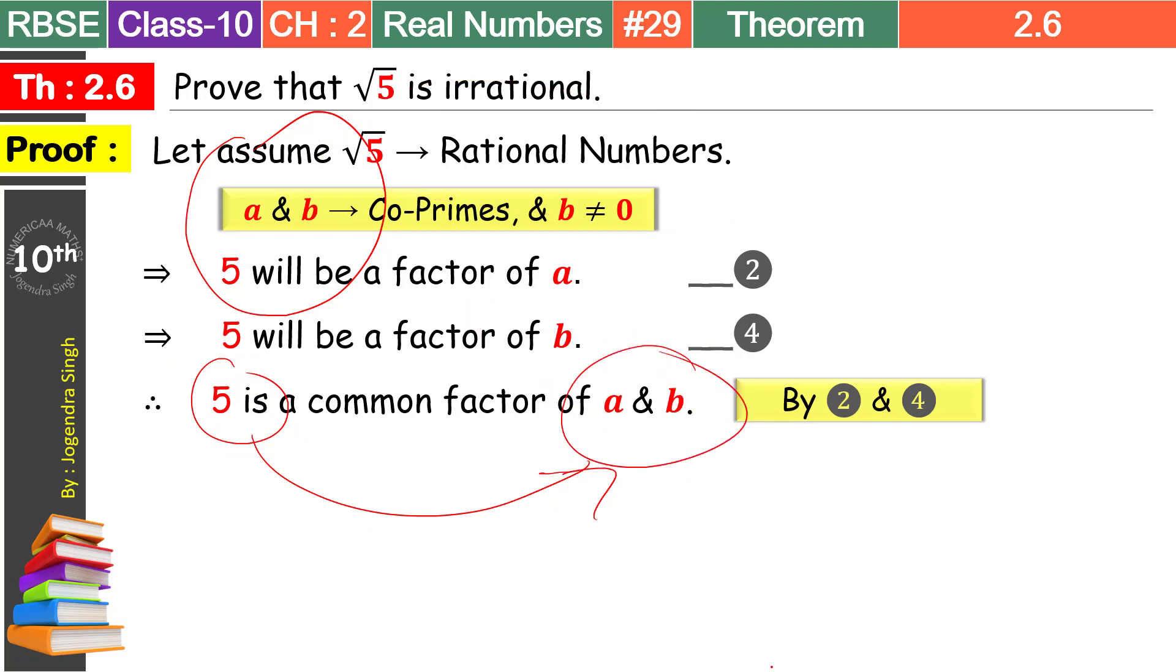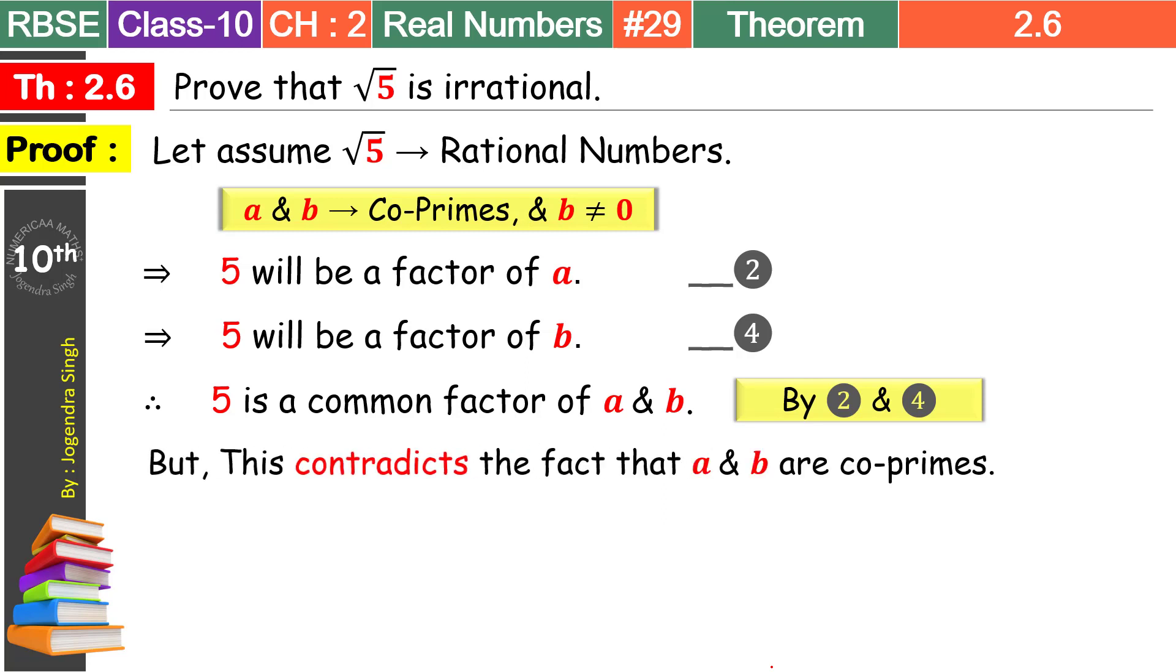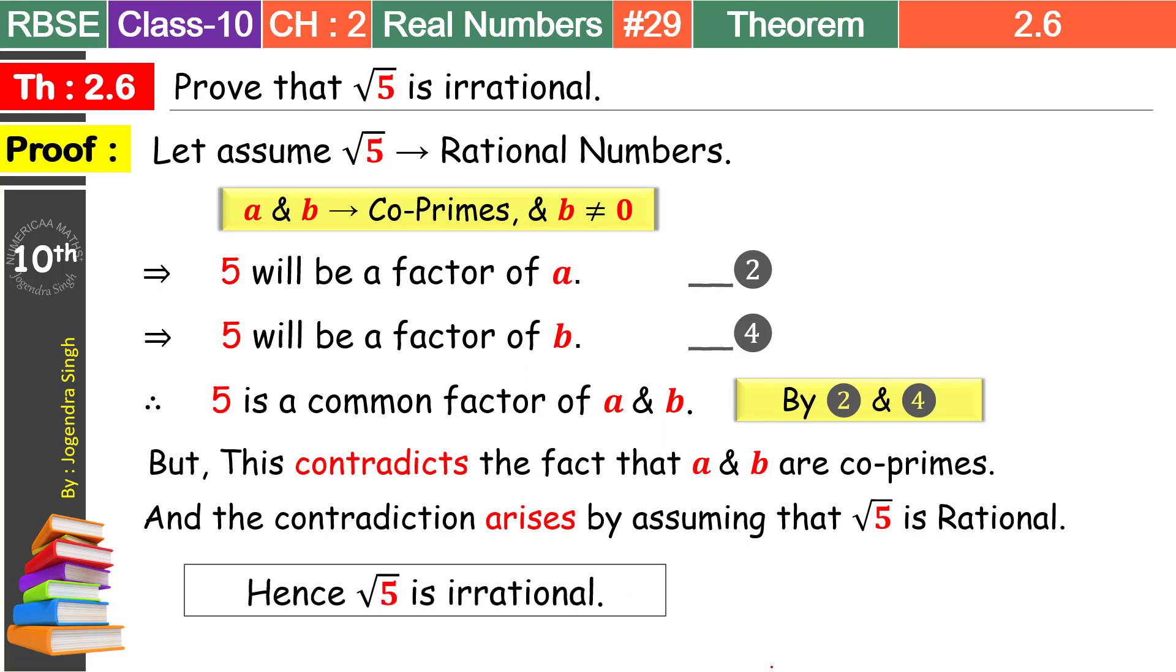Wo yeh hai ki humne root 5 ko rational number suppose kiya tha. Aur saath mein humne kaha tha ki a and b are co prime. Co prime matlab a aur b ke andar koi bhi common factor nahi hai. But humko abhi abhi kya mila hai. 5 is a common factor of a and b. So yeh jo situation hai, ismein humne kya milta hai. A aur b ke beech mein koi common factor nahi hai. Second situation, 5 a aur b ka common factor hai. So this situation is definitely an impossible situation. Toh jo cheez contradiction create kare, impossible result de, wo hum reject kar dete hain mathematics mein. Aur humko yeh impossible result kahan se mila tha. Root 5 ko rational number suppose karke. Toh definitely humara root 5 rational number nahi ho ga. Badalye mein kya ho ga? Toh irrational number ho ga. Ab iski language dekho kaise likhenge hum. But this contradicts the fact that a and b are co primes. And the contradiction arises by assuming that root 5 is a rational number. So according to this root 5 rational number hum accept nahi kar sakte mathematically. Toh hum kya likhenge. So then root 5 is an irrational number. Hence verified.